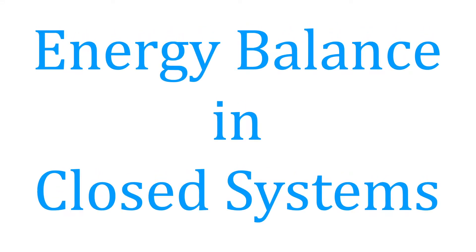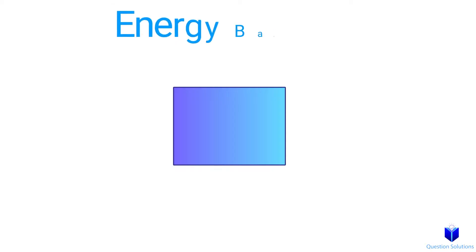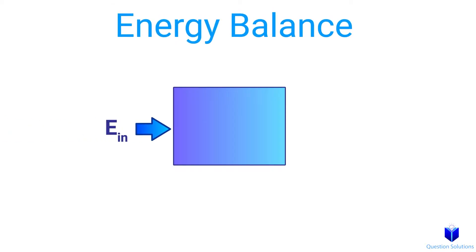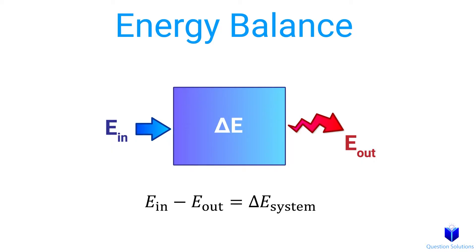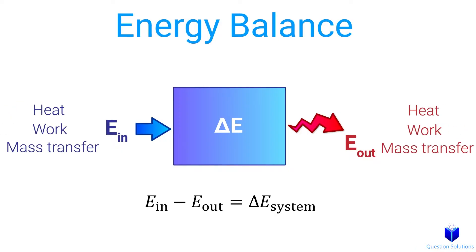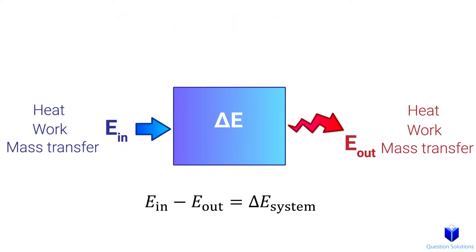Let's talk about energy balance in closed systems. If we have a closed system like this, we can say that the energy in minus the energy out gives us the change in the energy of the system. Energy in and out can happen due to heat, work, or mass transfers. The change in energy can be internal energy, kinetic energy, potential energy, and more.